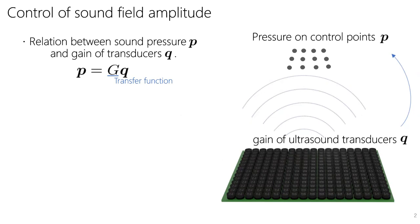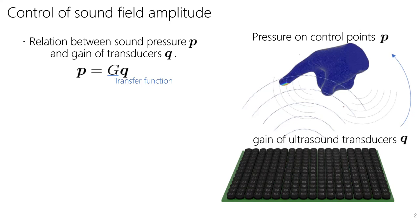If you consider the scattering sound field, which means considering reflection on the hand surface, you can generate a more accurate pressure distribution. In this case, the control points are set on the hand surface.